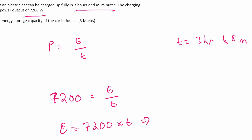All you need to do is convert the time to what we actually use in our formula — seconds, not hours or minutes. So 3 hours and 45 minutes to seconds: take the 3 hours, multiply by 60 to get minutes, then multiply by 60 again to get seconds. Then do the same for the 45 minutes — multiply by 60 seconds per minute.